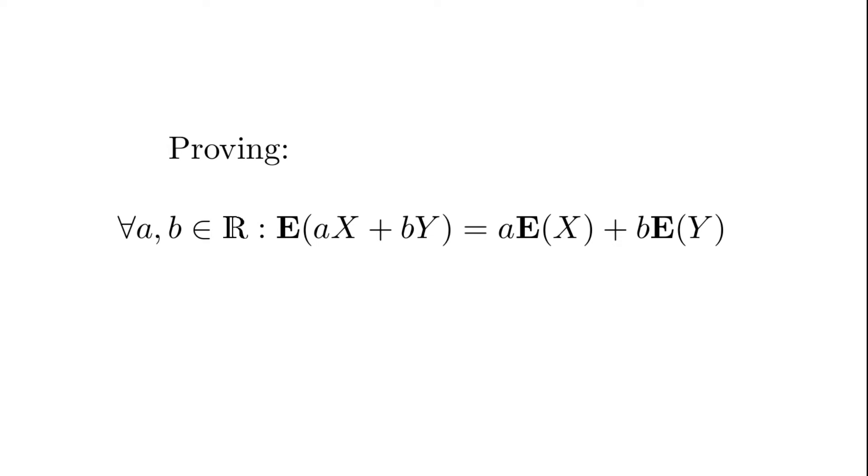We will prove the linearity of expectation. Here you can see the theorem, which states that for two real numbers a and b, the expectation of a times some discrete random variable X plus b times some discrete random variable Y equals a times the expectation of X plus b times the expectation of Y.